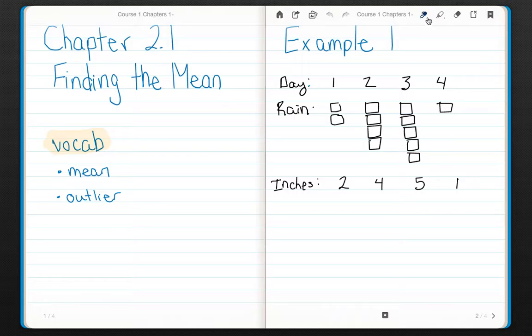The first is by using a picture. So here I wrote out the days, day 1, 2, 3, and 4, and I drew a picture. Each box represents 1 inch of rain. So on day 1, we had 2 inches. Day 2, we had 4 inches. Day 3, 5 inches. And day 4, only 1 inch of rain.